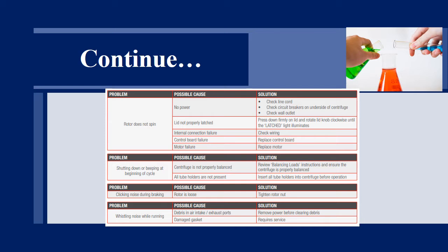Fourth problem is shutting down or beeping at the beginning of the cycle. The possible cause is the centrifuge is not properly balanced, review balancing loads. Shutting down or beeping at the beginning of the cycle can occur when all tube holders are not present on the rotor of the centrifuge. Insert all tube holders into centrifuge before operation.